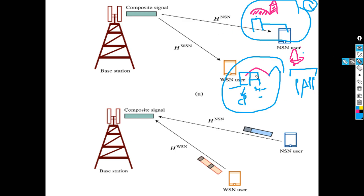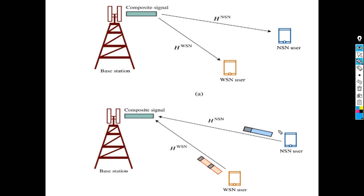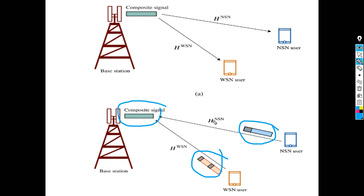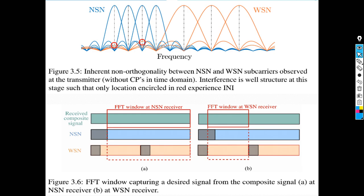In the downlink, you put all signals together to get a composite signal — they look like one signal, one signal goes to all users and each user gets their own portion. In the uplink, both users send their signals and they reach the receiver as a composite signal. You can separate them in the frequency domain because they are multiplexed in the frequency domain.